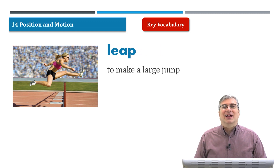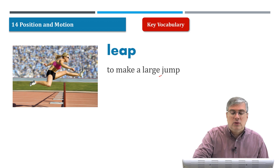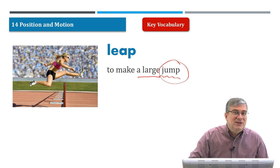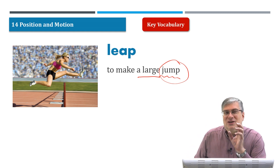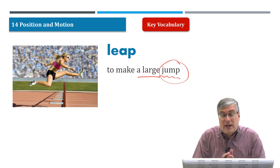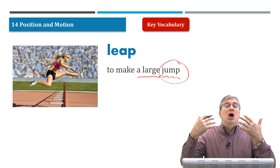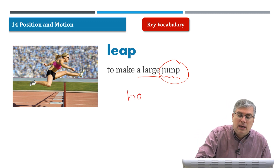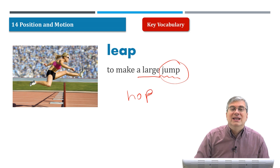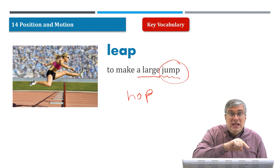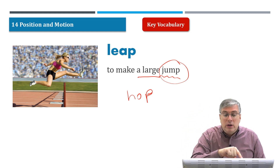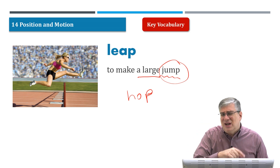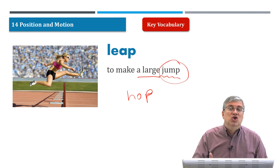Next is leap. Leap is like jump — they are very similar. Leap means to make a large jump; it's not just a small jump. Leap is one kind of jump. If you take a short jump, like a bunny rabbit, we say that's a hop. A hop is a short or small jump. A leap is a big jump — you go far on a leap, or you can jump over something. This woman is jumping over something, so she's going to leap over it.